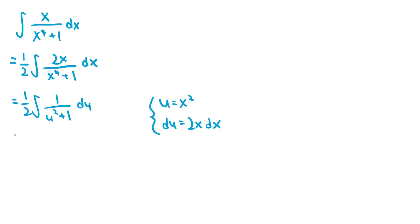So this entire expression just becomes 1 half arctan of u plus some constant c. And we can substitute the x squared back in for the u. So the final answer is just 1 half arctan of x squared plus some arbitrary constant c.